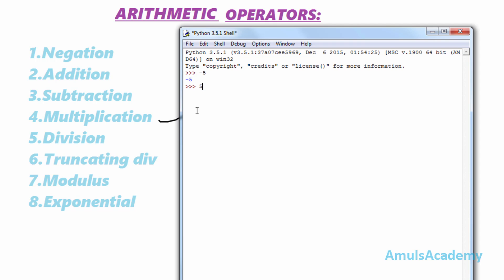For addition, 5 plus 6 equals 11. The third one is subtraction — the minus symbol is used for subtraction, for example 5 minus 3 equals 2. The fourth one is multiplication — the star symbol is used for multiplication, for example 5 times 2 equals 10. The fifth one is division — 25 divided by 5 equals 5, where the forward slash is used as the division symbol. These are the basic arithmetic operators.